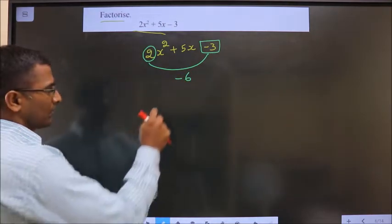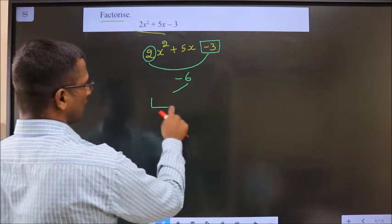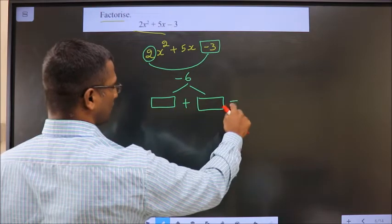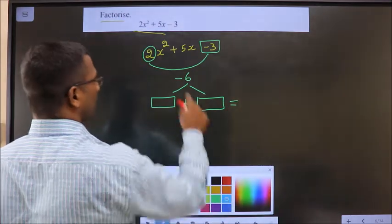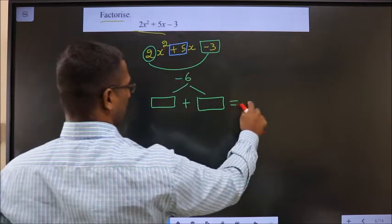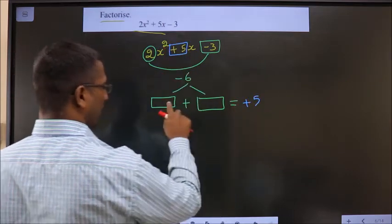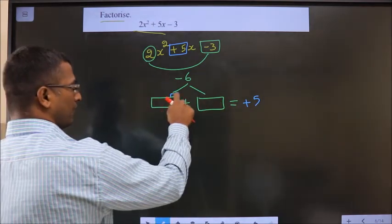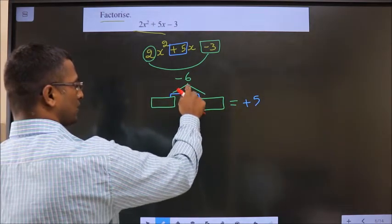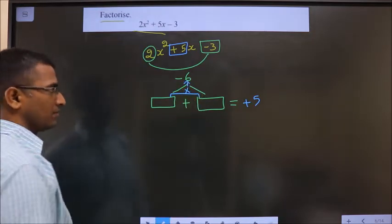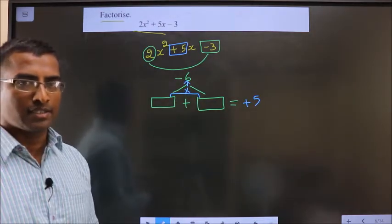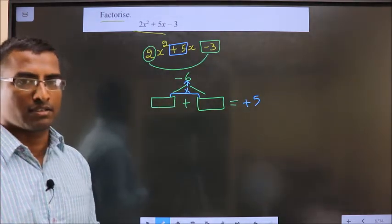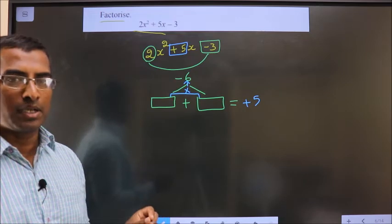Next, you should look out for 2 numbers such that when you add them you should get this middle number which is 5. If you add these 2 numbers you should get plus 5 and also when you multiply these 2 numbers you should get minus 6. You need to look out for 2 numbers such that when you add you should get plus 5 and when you multiply you should get minus 6.